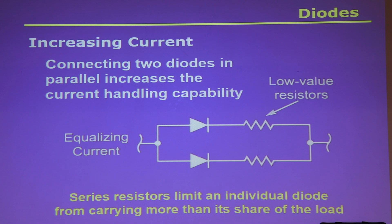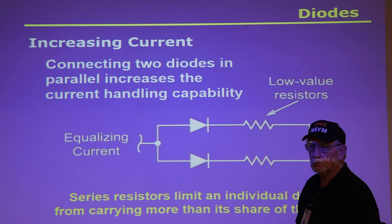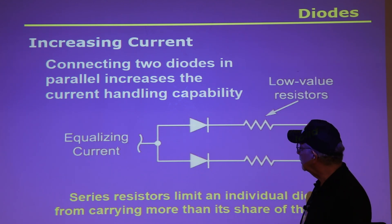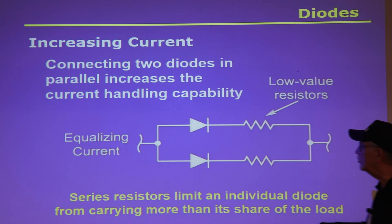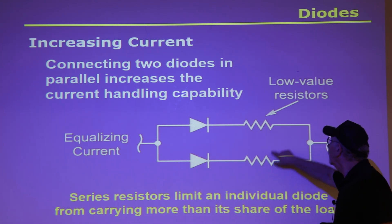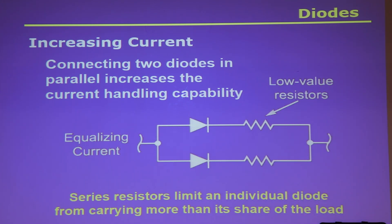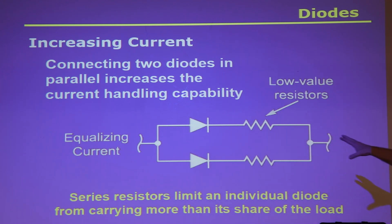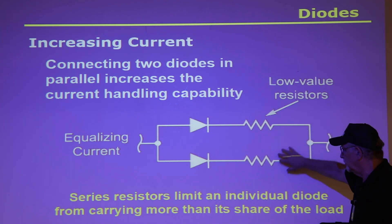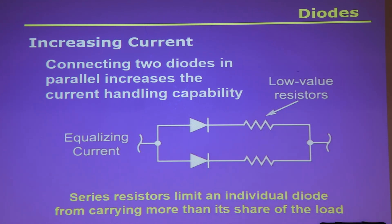If you want to increase the current, you can put diodes in parallel — the current will split up. If you only have 50-volt diodes and need 100 volts, you can put two in series and split the current. However, you need to put a low-value resistor in series with each diode to balance them, because manufacturing characteristics aren't always the same and one may pass more current than the other. The series limiting resistors help keep either one from carrying too much of its share of the load.